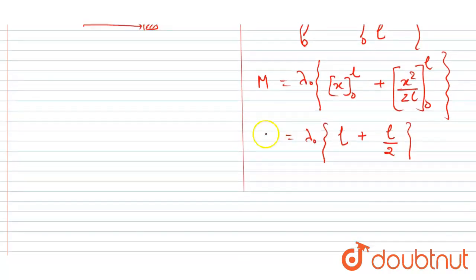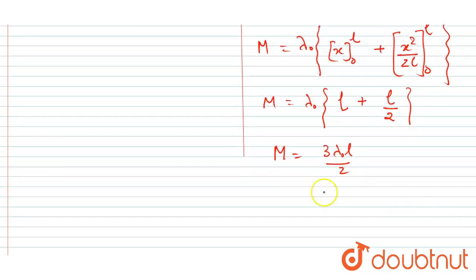Right, so I will write M equals L lambda naught times 3L by 2. So from here you will get the value of lambda naught equals 2M by 3L.